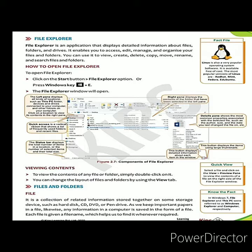Do you know what is called a file? A file is a collection of related information stored together on some storage device such as a hard disk, CD, DVD, or pen drive. Related information means information that is stored together. Like we keep important papers in a file — likewise, any information in your computer is saved in the form of a file, and each file is given a file name which helps us to find it whenever it is required.